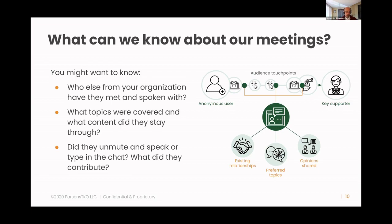Another thing you can start attributing to your events are topics and topical preferences. You know what you talk about in your events, and you can keep track of that. If you can start recognizing how people do or don't engage in a meeting based on those topics, you can start to build a better understanding of what motivates them, why they come to you, why they support you, why they believe in your work. That can also help you with planning those events — being able to recognize where people are engaging more or less, and how you might want to balance topics within each of your events.